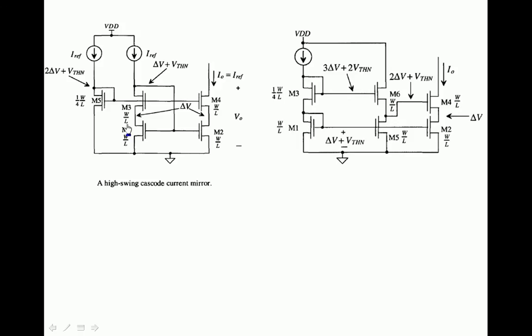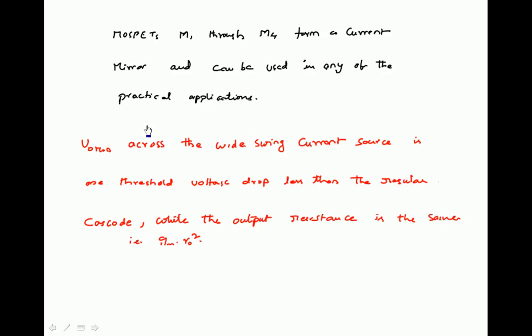M1, M2, M3, M4 — these four transistors form the current mirror. The minimum output voltage across the wide swing current source is one threshold voltage drop less than the regular cascode, while the output resistance is the same as Gm times R0 squared. Comparing with the regular cascode current mirror, whose V0 minimum is 2 delta V plus Vt, here for the wide swing it is 2 delta V only. So V0 minimum is one Vt less than regular cascode, but the output resistance Gm·R0² is the same for both.